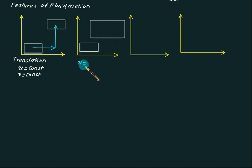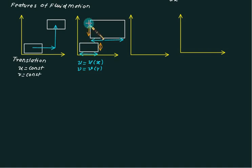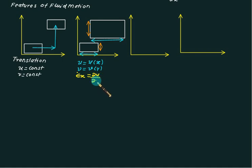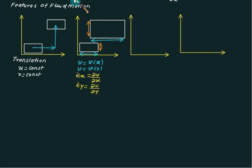If u is a function of x and v is a function of y, the fluid element will have translation plus linear deformation — it deforms along the x direction and also along the y direction. The linear strain rate along x is ε̇ₓ = ∂u/∂x, and the linear strain rate along y is ε̇ᵧ = ∂v/∂y. These are the velocity gradients along the x and y axes.